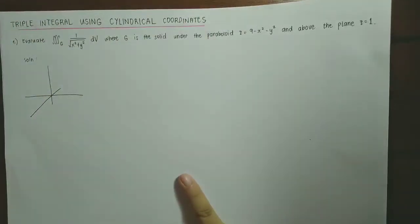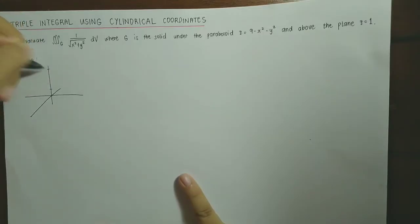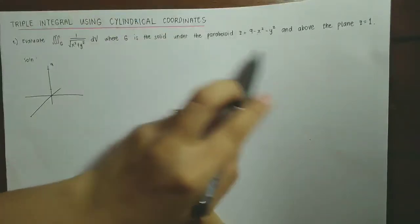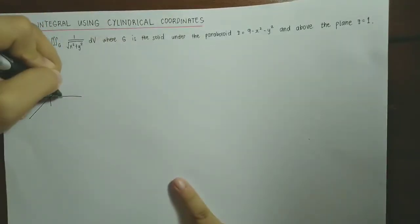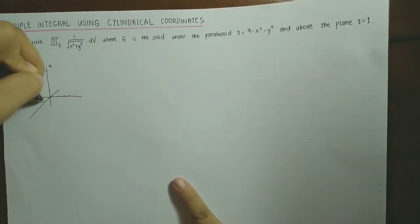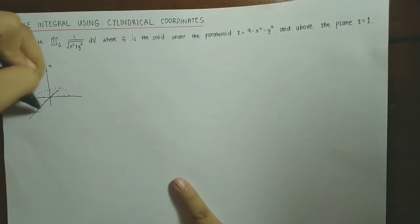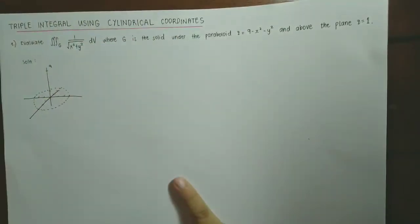The first thing is to sketch G. So z = 9 - x² - y² is a paraboloid with its tip at z = 9. At the xy-plane where z = 0, we get x² + y² = 9, which is a circle of radius 3. The solid is bounded below by z = 1.